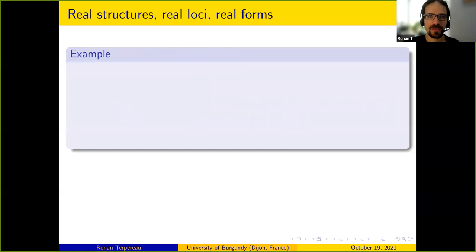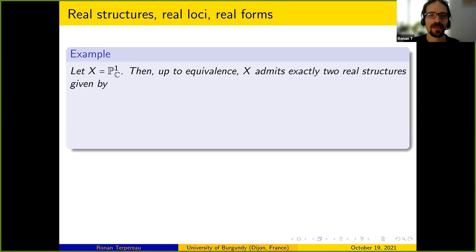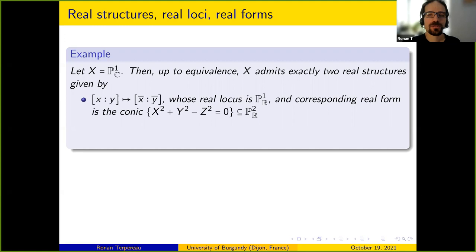Let's do examples. Starting with X = P^1, the projective line, up to equivalence X has exactly two real structures. The first one is mu: (X:Y) maps to (X̄:Ȳ), whose real locus is P^1(R) — the corresponding real form is a rational conic. The second is mu: (X:Y) maps to (-Ȳ:X̄), and then the real locus is the empty set.